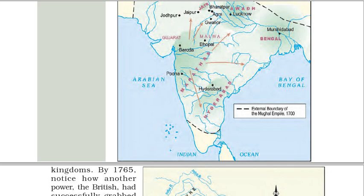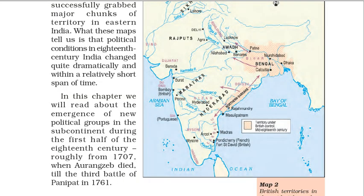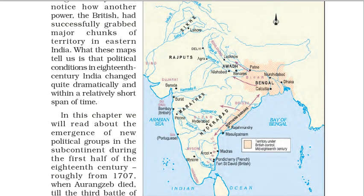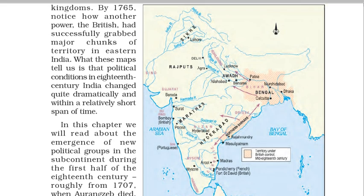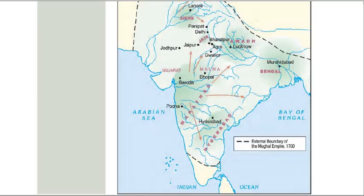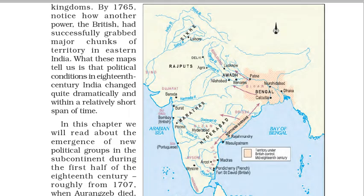By 1765, notice how another power — the British — had successfully grabbed major chunks of territory in eastern India. What these maps tell us is that political conditions in 18th century India changed quite dramatically and within a relatively short span of time. Map 1 shows state formations in the 18th century; Map 2 shows British territories in the mid-18th century.